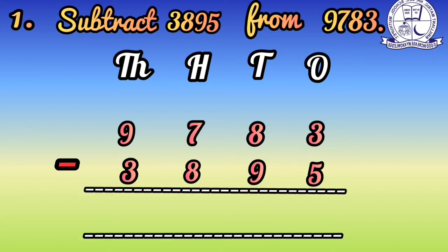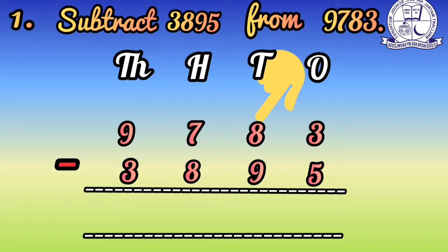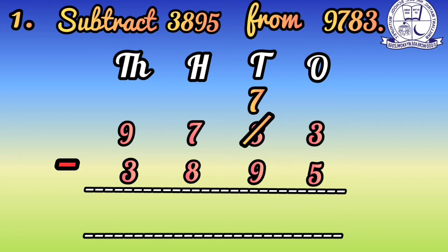Now we subtract. In the ones place, five is bigger than three. Since three is smaller than five, we cannot subtract directly. So we need to borrow one ten from the tens place. When we borrow from the tens place, we bring 10 to the ones place, giving us 10 ones there.